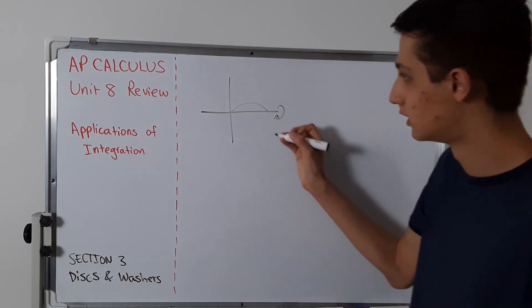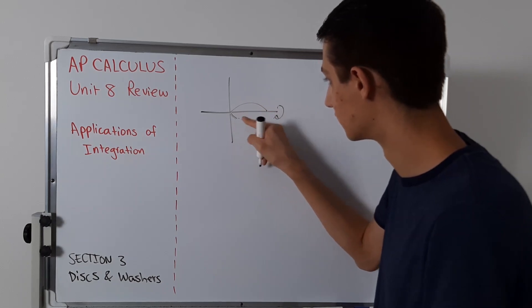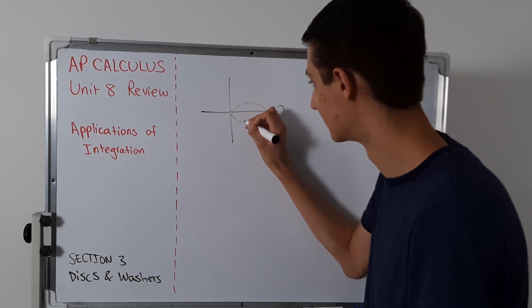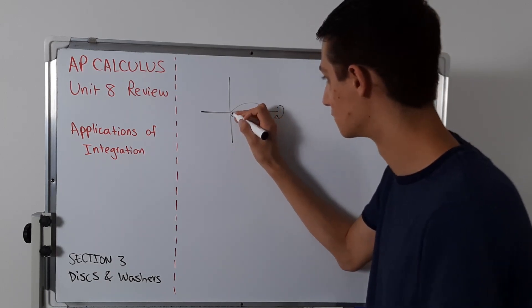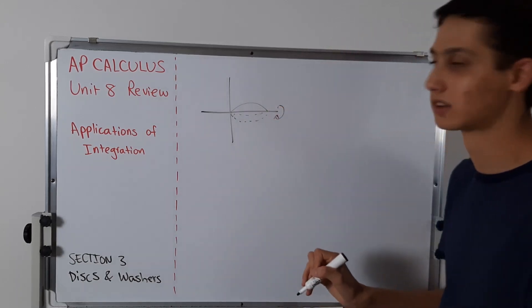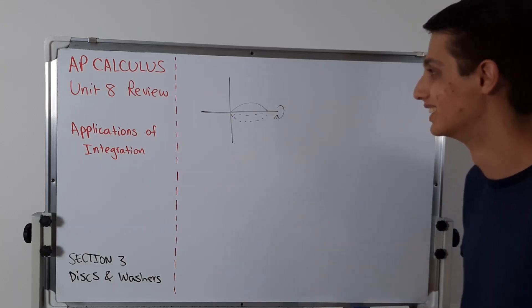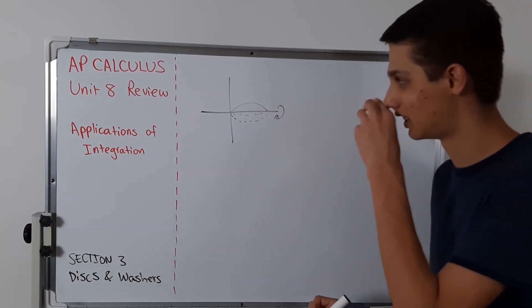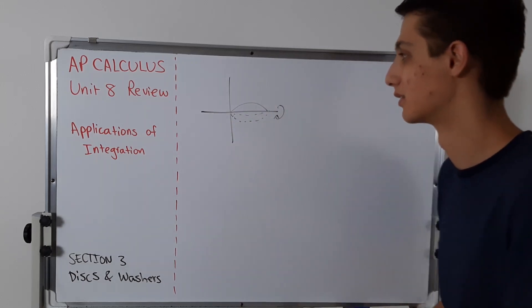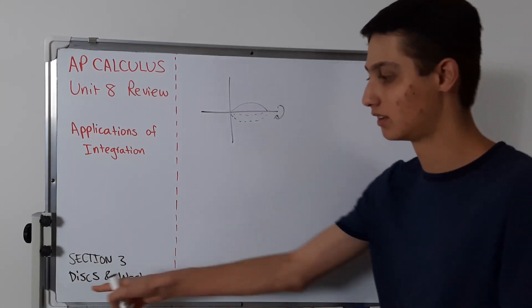This region, if rotated, is going to look kind of like a football or a lemon — that kind of football-looking shape. The way we're going to do this is what we call the disc method. It's like we're rotating a disc. If you took a cross section and sliced it, you would see just circles, because the whole thing is being rotated around the axis.